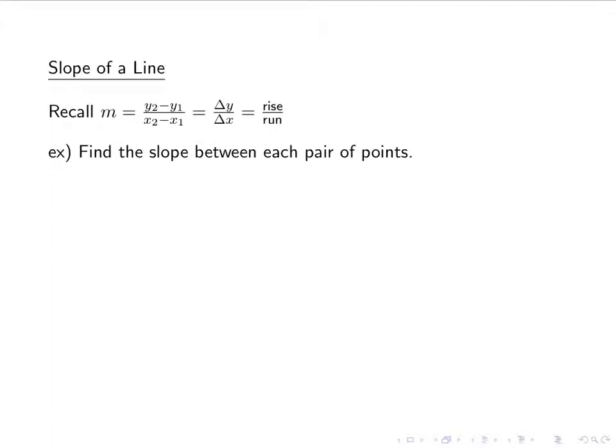So we'll do a couple examples of finding the slope between pairs of points. The first one, between 1 comma 0 and 2 comma negative 1. So if I plug in my, this point as x2, y2, this point as x1, y1, I get negative 1 minus 0 over 2 minus 1, which simplifies down to negative 1. 3 comma 5 and negative 2 comma 5. 5 minus 5 over negative 2 minus 3. That's 0 over negative 5, which is 0. 0 divided by anything that's not 0 is 0.